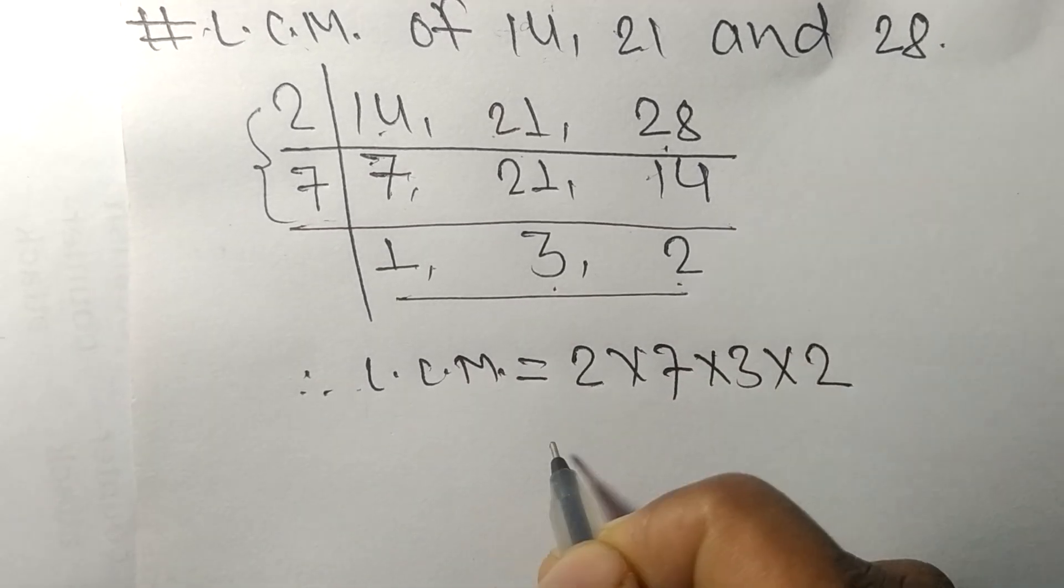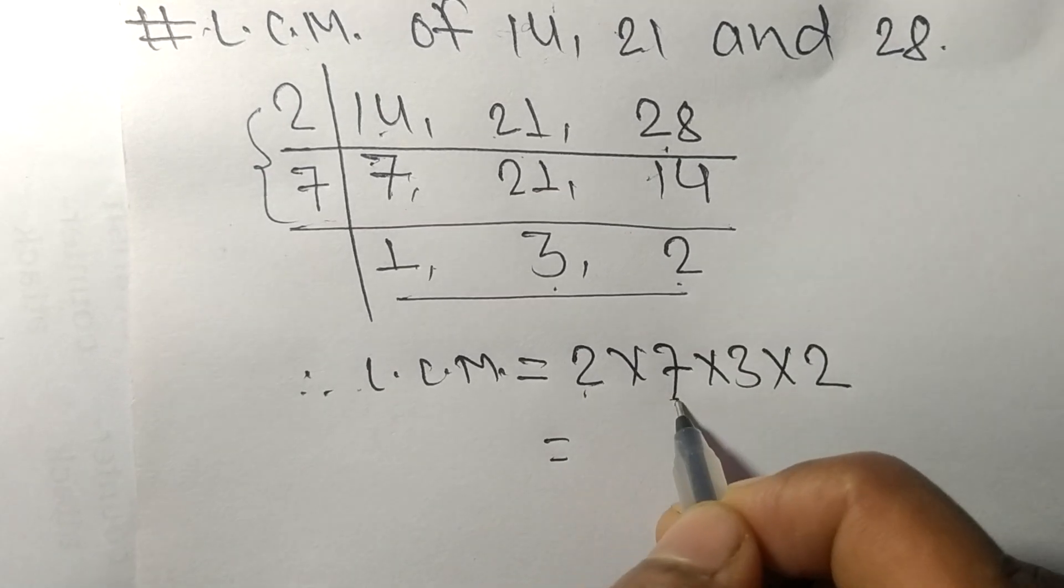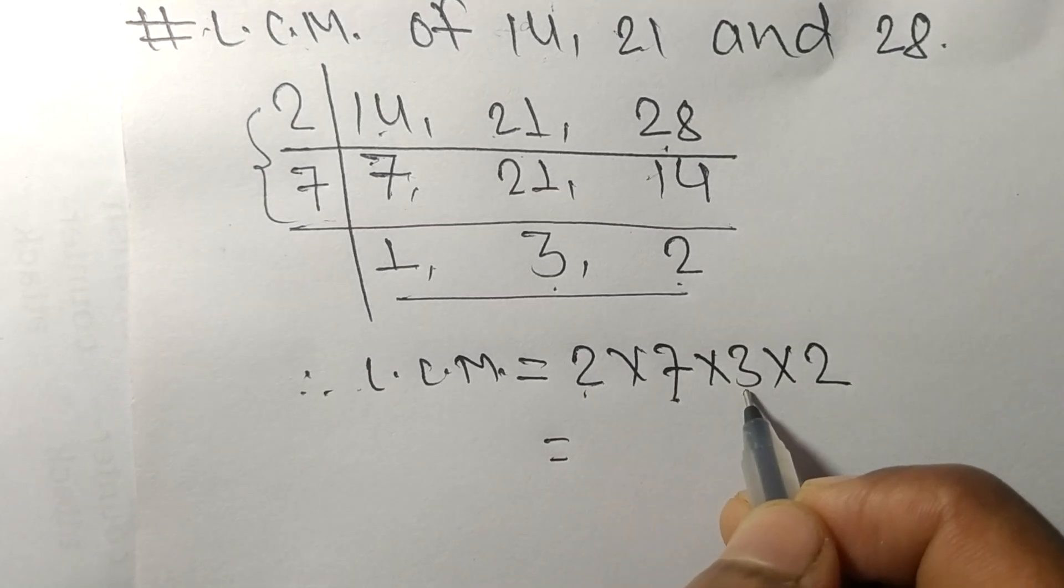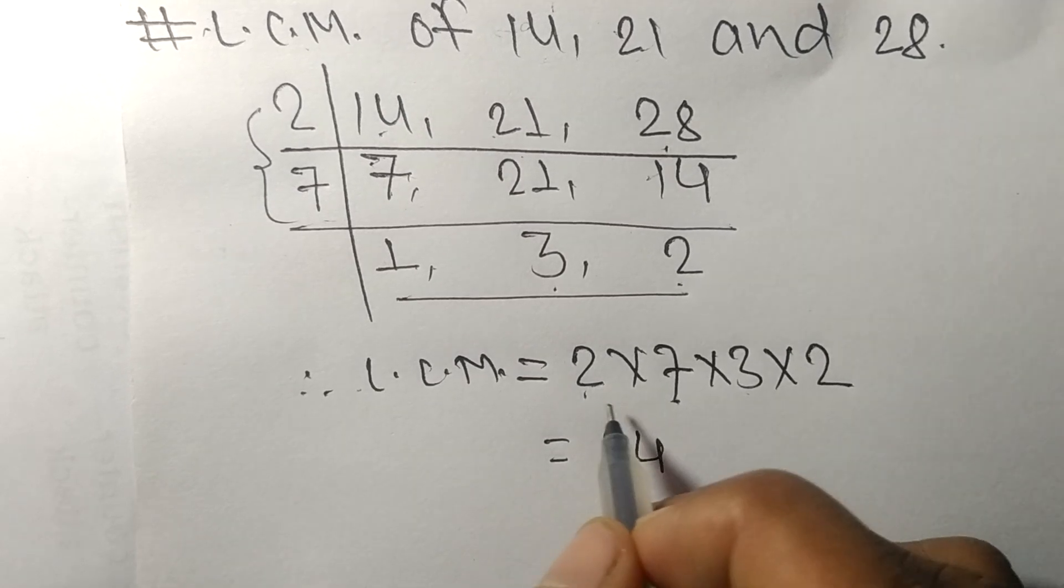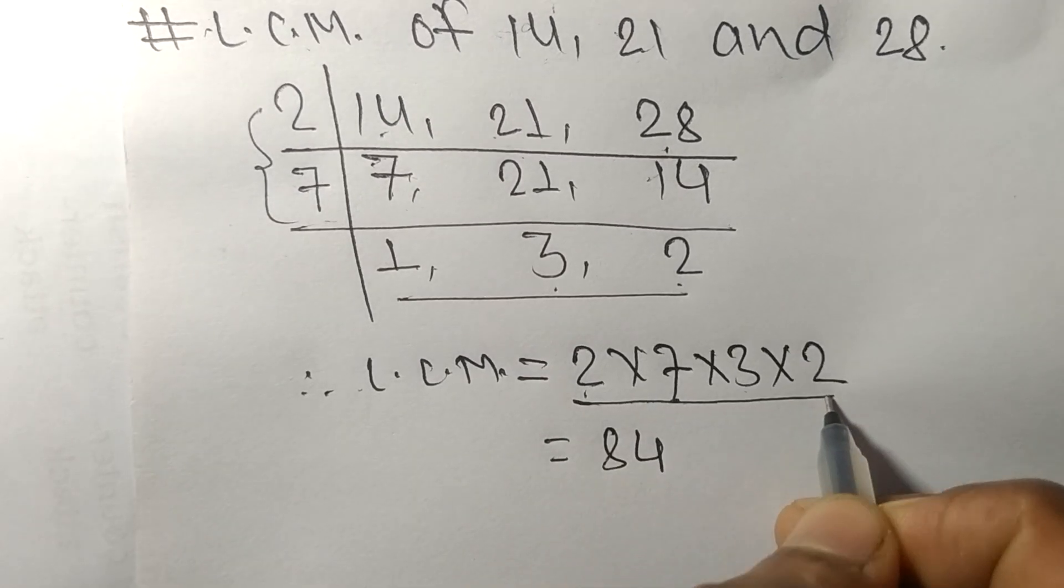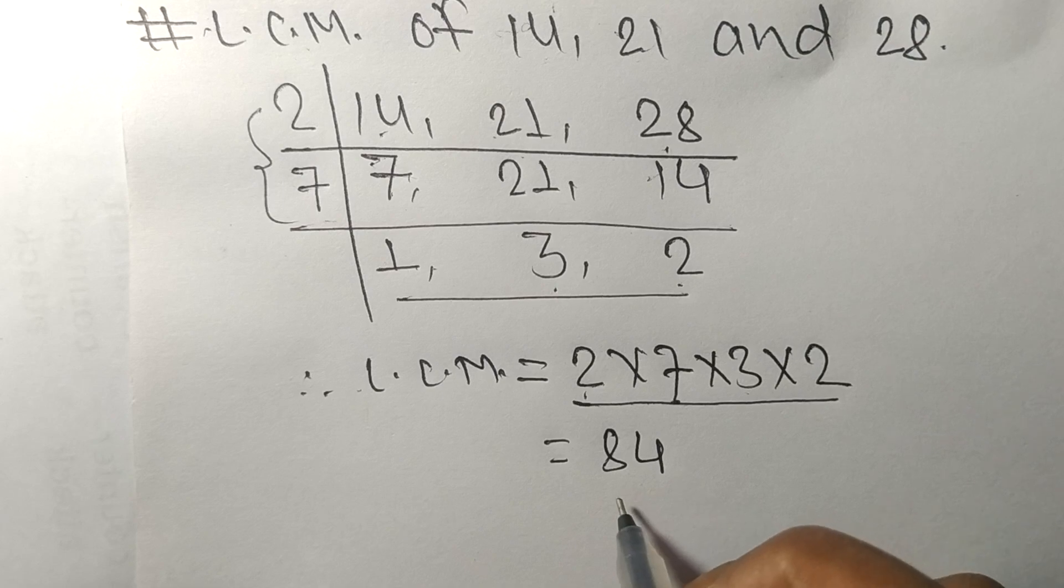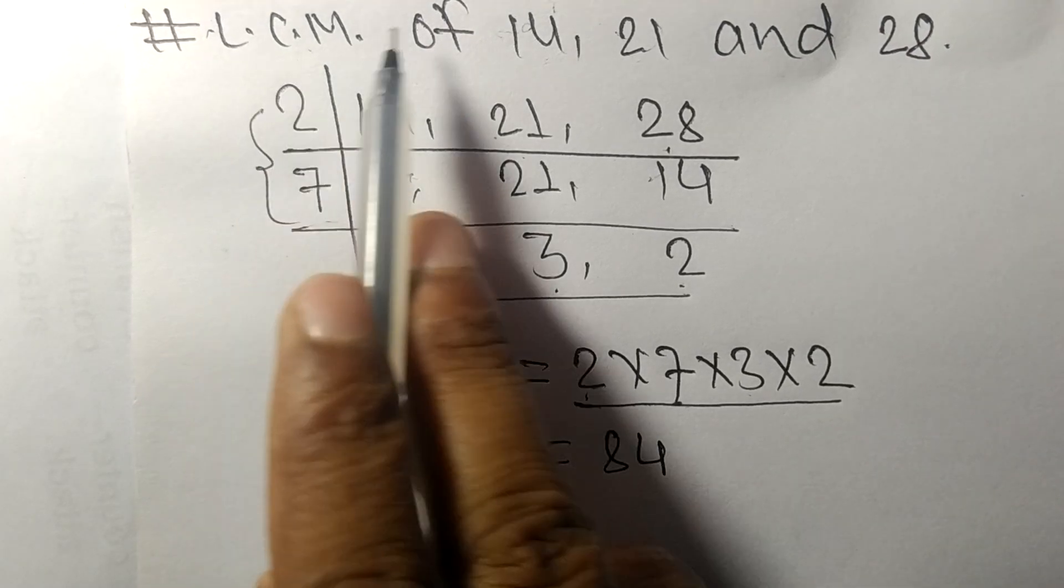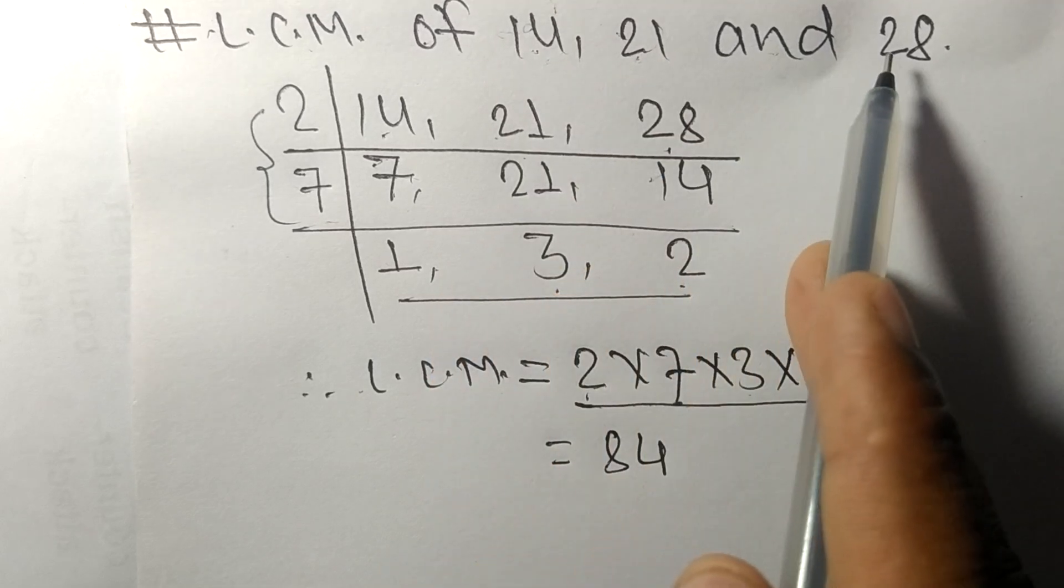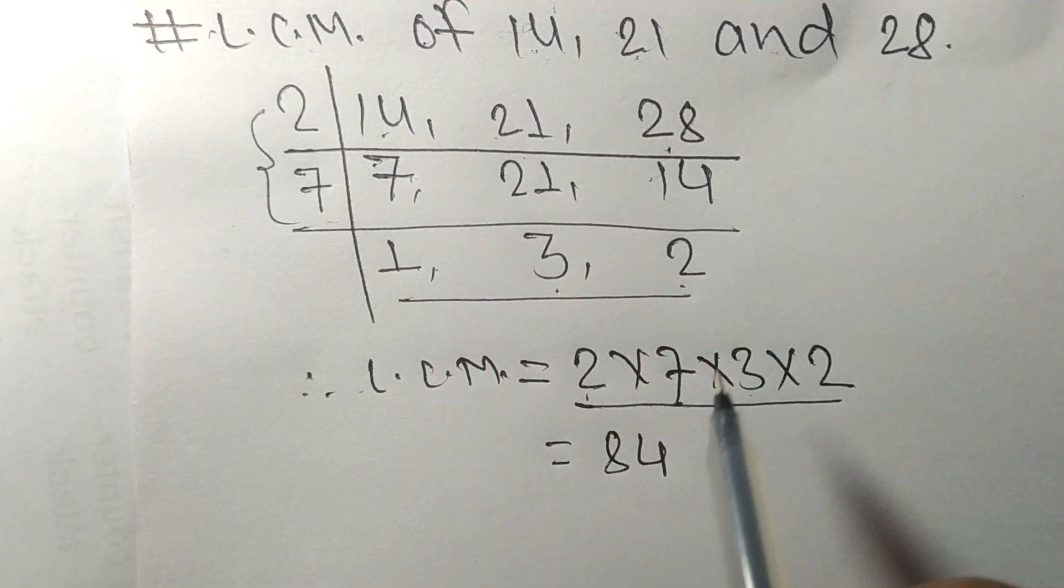2 times 7 equals 14, 14 times 3 equals 42, 42 times 2 equals 84. So by multiplying all these numbers we got 84. So 84 is the LCM of 14, 21, and 28.